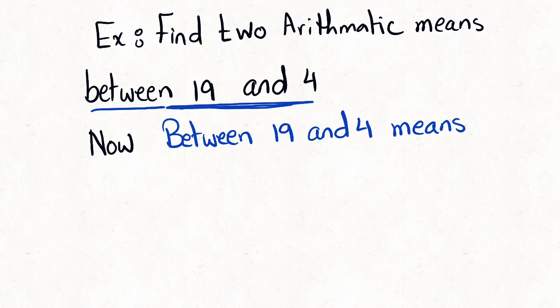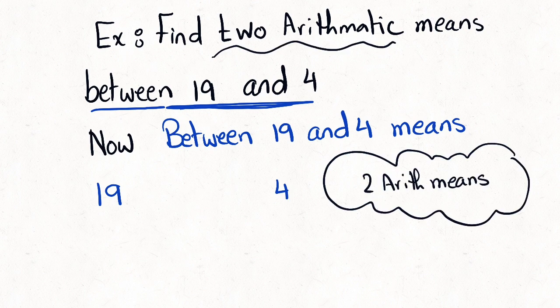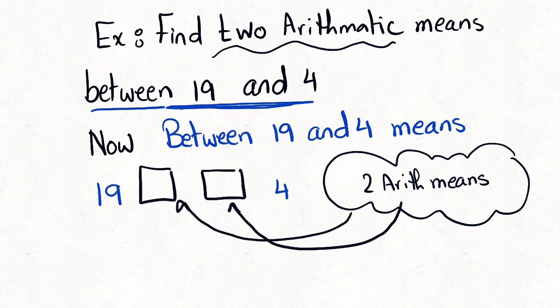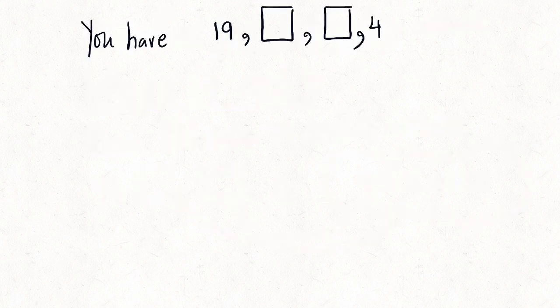Two arithmetic means between 19 and 4 means two numbers placed between them, like two empty boxes. You need to figure out what d is in order to complete the sequence. Count how many terms you have: a1 = 19, then two middle terms a2 and a3, then a4 = 4.